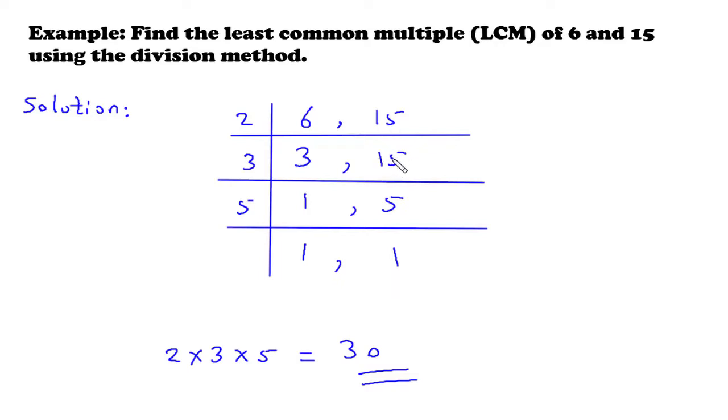Continue the steps until one is left in the last row. Step 3: the LCM is the product of all the prime numbers. LCM of 6 and 15 is 2 × 3 × 5 = 30.